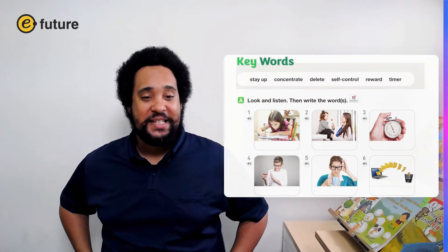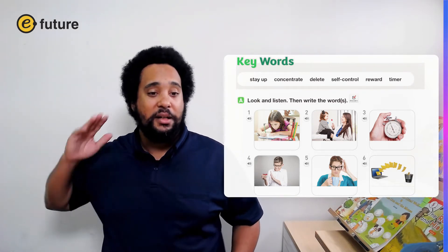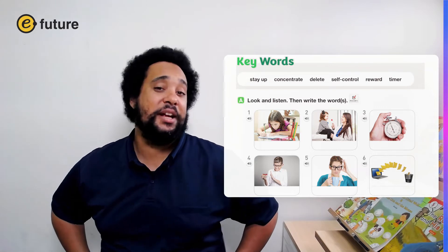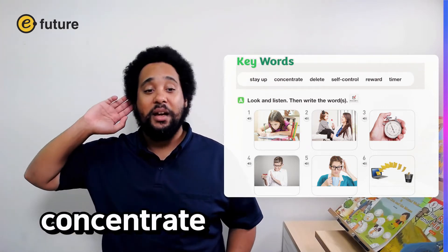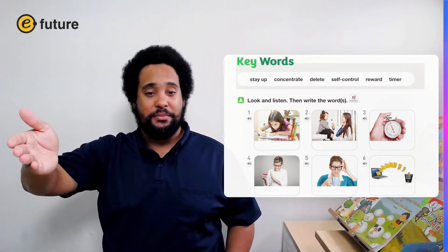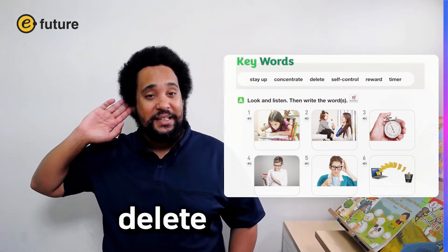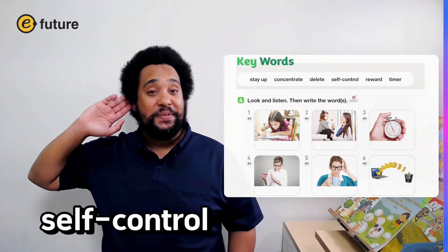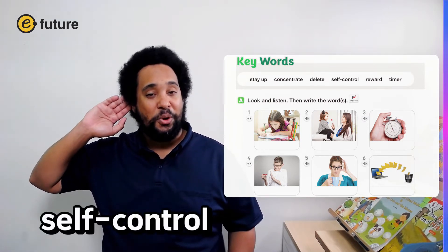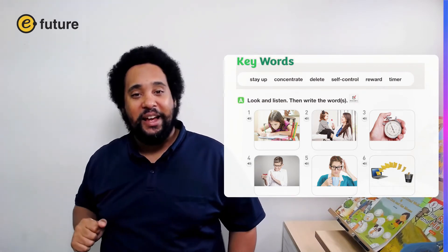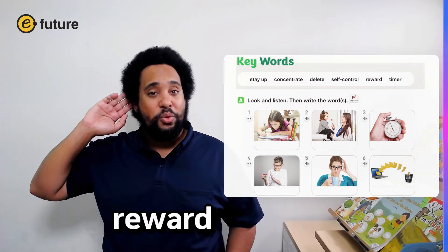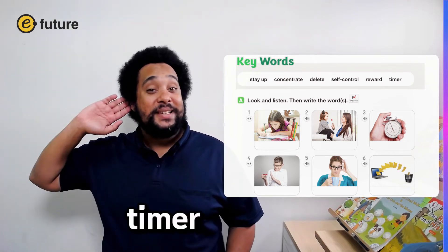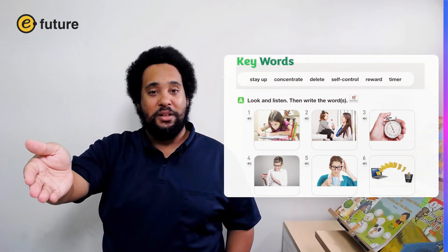Our first word is stay up. Can you repeat after me? Stay up. Stay up. Our next word is concentrate. Concentrate. Next we have delete. Delete. Our next word is self-control. Self-control. And next we have reward. Reward. And finally we have timer. Timer. Very good.